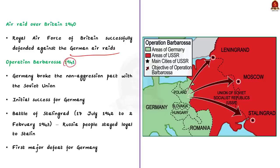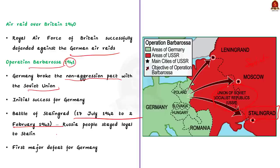Later in 1941, Germany broke the non-aggression pact with the Soviet Union and launched Operation Barbarossa, invading the Soviet Union. Although the Germans initially met with success, the operation culminated in the Battle of Stalingrad, which lasted from 17th July 1942 to 2nd February 1943. Hitler had hoped that poor living and working conditions would spark an anti-Stalin revolution, but the Russian people stayed loyal, successfully defending Stalingrad. This stopped the German advance and marked the turning of the tide of war in favour of the Allies.